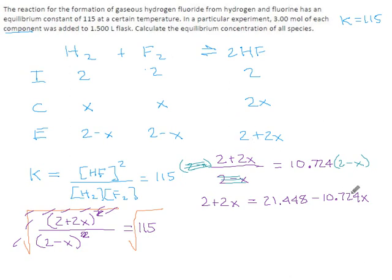Okay, if we segregate this, we want to get all of our x's to one side, all of our numbers to the other. So the 10.724x comes over to this side. Added to the 2x we already had, we'll make 12.724x. We subtract 2 from each side, or take this 2 to the right, it becomes negative, and that takes us to 19.448.